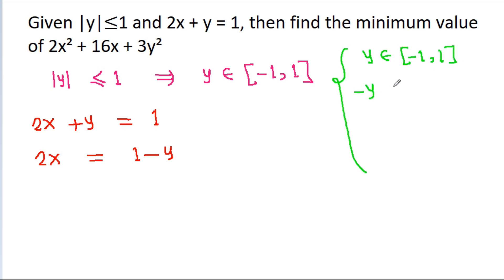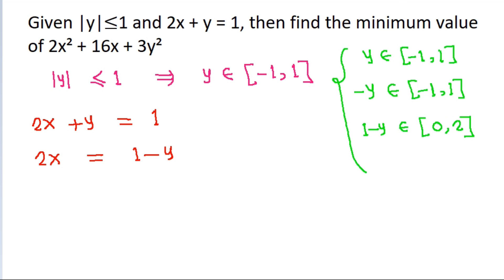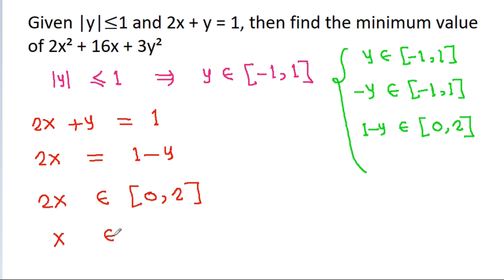So minus y will also belong from minus 1 to 1. Adding 1, we get 1 minus y belonging from 0 to 2. Since 1 minus y equals 2x, then 2x belongs from 0 to 2, and therefore x belongs from 0 to 1.